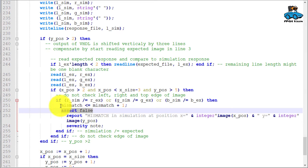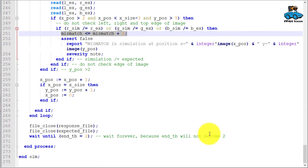If there is a mismatch, we have an assert statement. And we have a counter for the number of mismatches. And then at the end of the process, we close response and expected file.